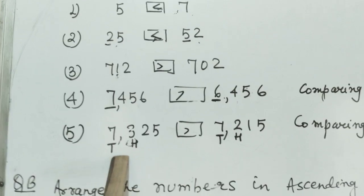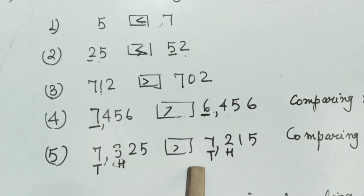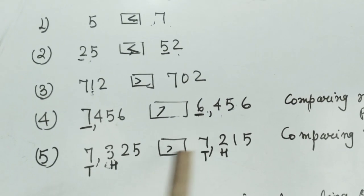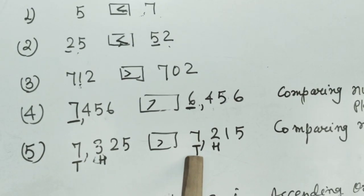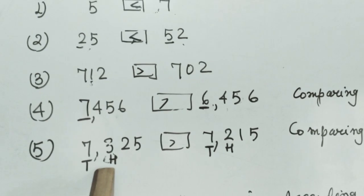In question number 5, this is 7325, this is 7215. The 1000th place in both cases is the same. So let us compare the digits at the 100th place.